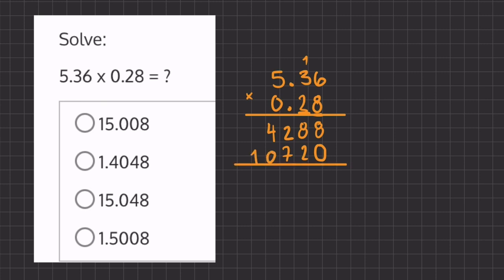Alright, so now what we have left to do is add all of our numbers here to get our final answer. So we have 8 plus 0 is 8, 8 plus 2 is 10, 1 plus 2 plus 7 gives us another 10, 1 plus 4 is 5, and 1 plus 0 is 1.